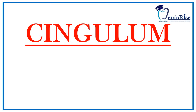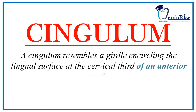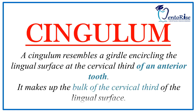Let's start our discussion with cingulum first. As per Wheeler's, a cingulum resembles a girdle encircling the lingual surface at the cervical third of an anterior tooth. This implies that cingulum is present particularly in the anterior teeth, i.e., the central incisors, lateral incisors, and the canine — particularly on the lingual surface of these anterior teeth, and even then, only on the cervical third of that lingual surface.